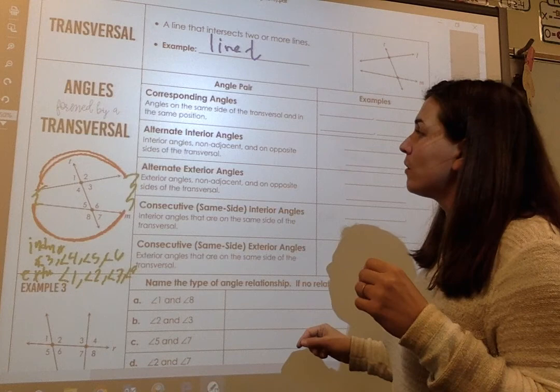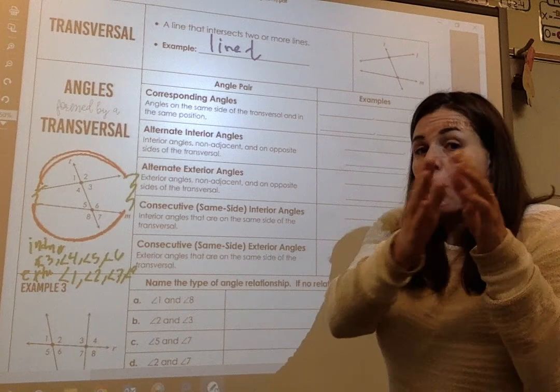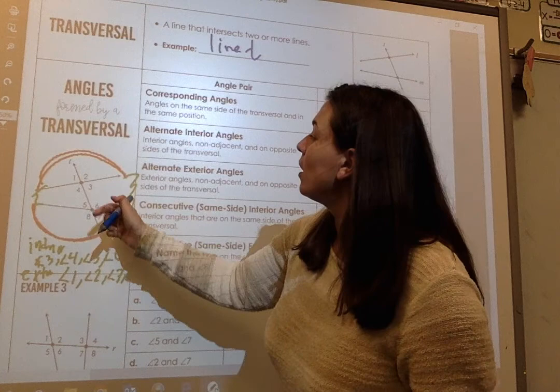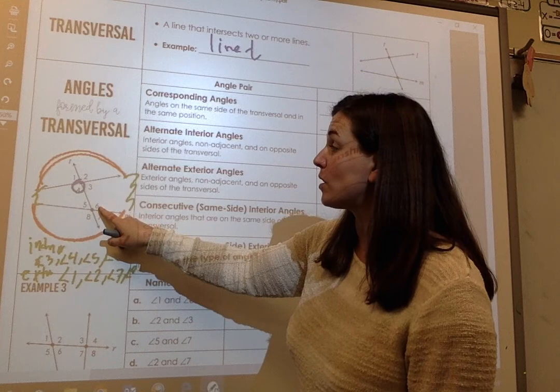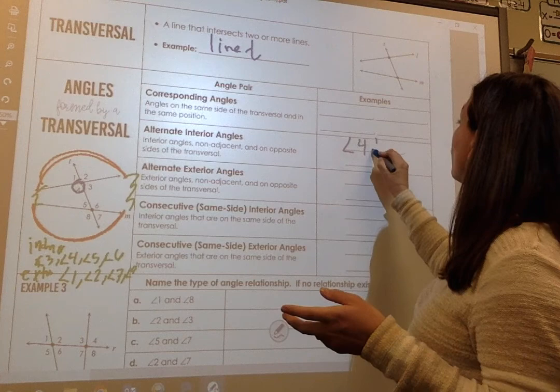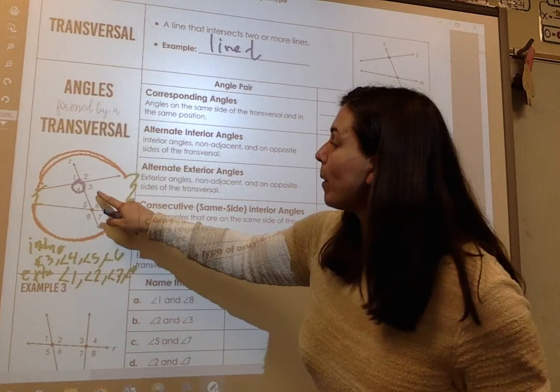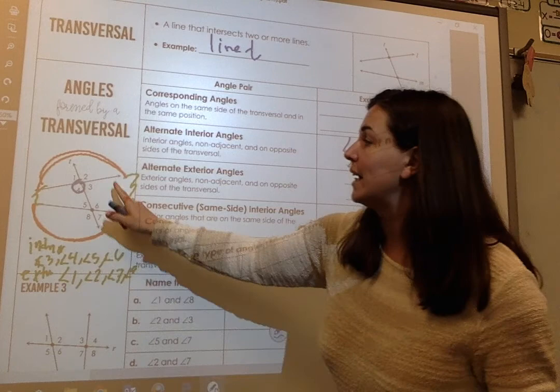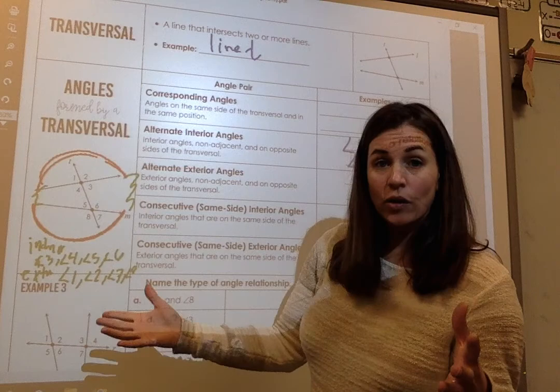Starting with alternate interior angles — alternate interior means they're opposite. One's on the top, one's on the bottom; one's on the left of the transversal, one's on the right. So what alternates with angle 4? It has to be angle 6. This one's on top, this one's on the bottom; this one's on the left, this one's on the right. So angle 4 and angle 6 are alternate interior. Another pair is angle 3 and angle 5.